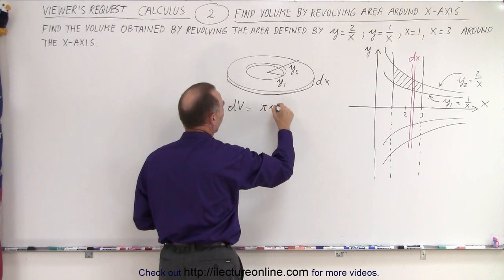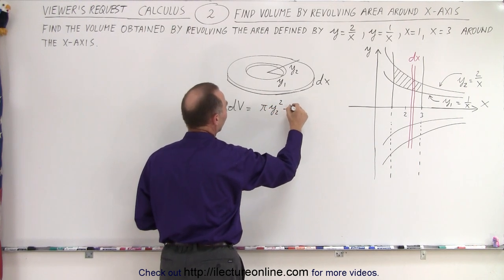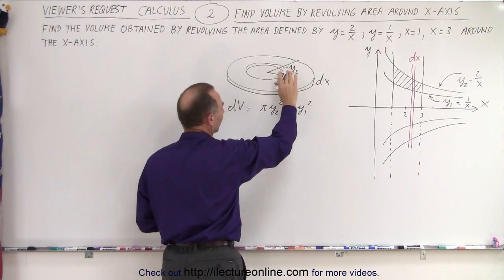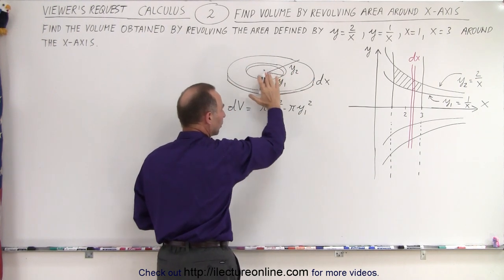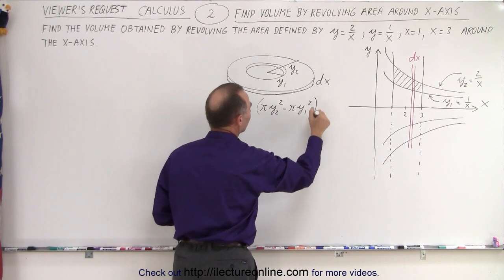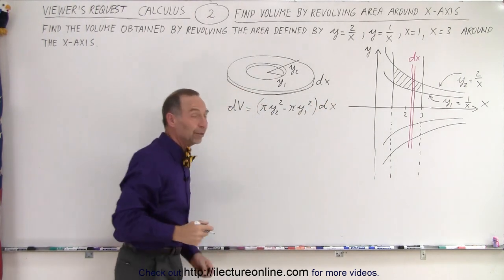So that would be πy2² minus πy1². That would be the surface area, so that of the whole disk minus the hole. And we multiply times the thickness, which is dx, and that gives us the volume.